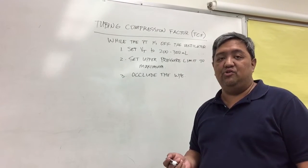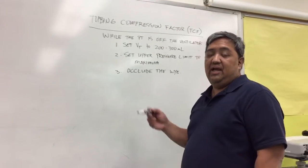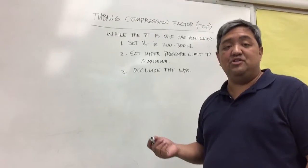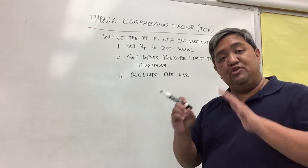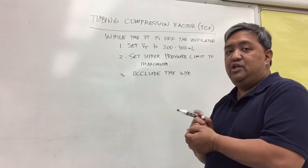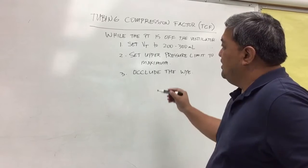We want to set the tidal volume to about 200 to 300 mls, and then set the upper pressure limit to maximum. Then we need to occlude the Y.